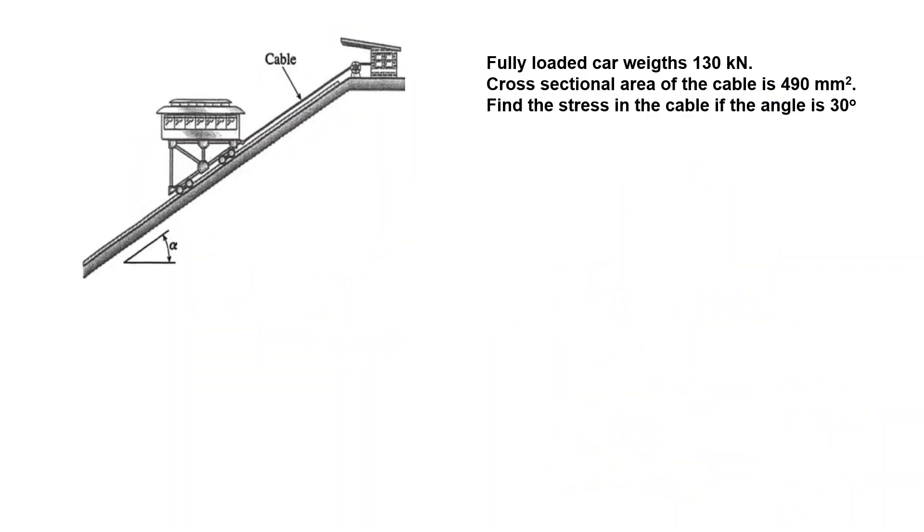Next problem: here we have a funicular and the car when fully loaded with people weighs 130 kN. We have a cable pulling this car and the cross section area of the cable is 490 mm². Find the stress in the cable if the angle is 30 degrees.